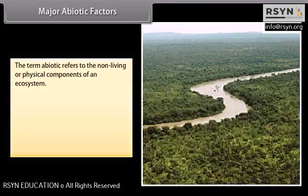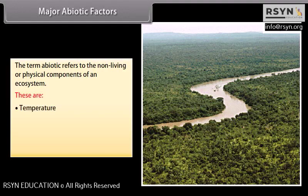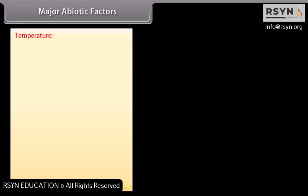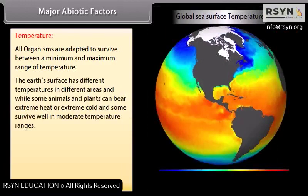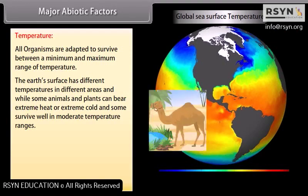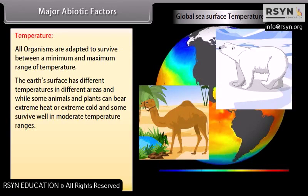The term abiotic refers to the non-living or physical components of an ecosystem. These are temperature, water, light, and soil. All organisms are adapted to survive between a minimum and maximum range of temperature. The earth's surface has different temperatures in different areas, while some animals and plants can bear extreme heat or extreme cold, and some survive well in moderate temperature ranges.